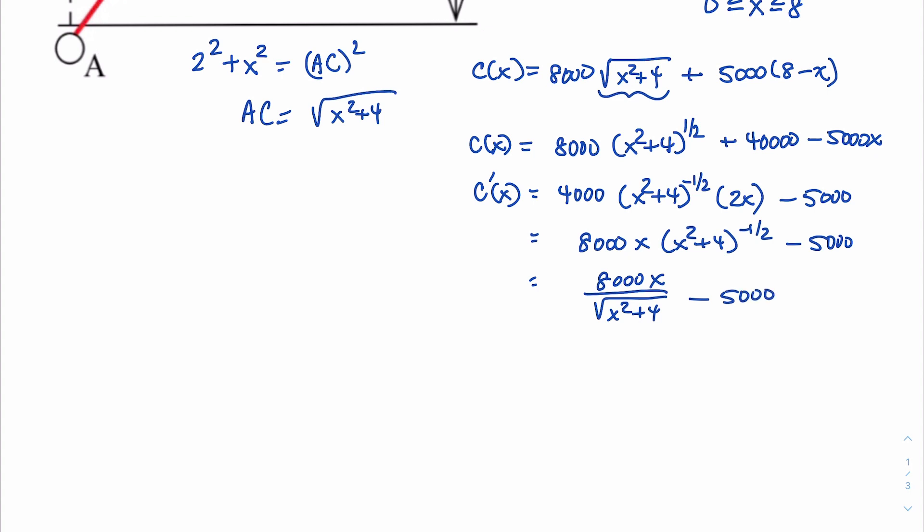Now remember that critical numbers occur when the derivative is either equal to 0 or is undefined. And you might be thinking this is undefined because there's a denominator here. But remember that denominator is x squared plus 4. There's no value of x that makes that 0. x squared is non-negative and adding 4 just means my denominator is always at least 4, never 0. So I'm going to set the derivative equal to 0 in hopes of finding a critical number.